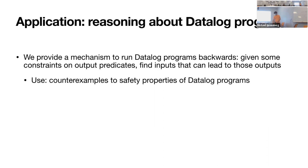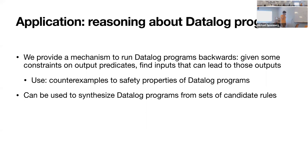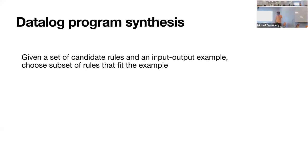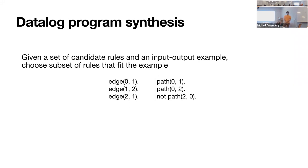Another use case — which Michael and I have been working on — is trying to synthesize datalog programs. In particular, given some set of candidate rules, trying to choose the correct subset of those rules as your program. We get an input-output example and a set of candidate rules and want to choose a subset such that if you run that subset on your input, you get the expected output. Our input might be some edges in a graph, and our output might be constraints on what we want path to be. Unlike the previous case of finding edges, here we're trying to learn rules.